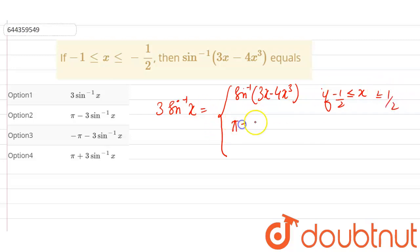And pi minus sine inverse 3x minus 4x cube if x is between 1 by 2 to 1, and minus pi minus sine inverse 3x minus 4x cube if our x is between minus 1 to minus 1 by 2.